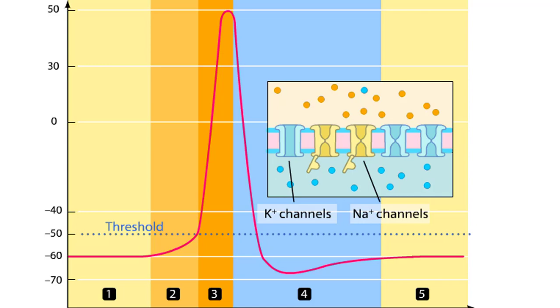An action potential is a rapid change in membrane potential that is governed by the opening and closing of ion channels in the plasma membrane of the neuron. In this tutorial, we will review the events of an action potential measured from a small area of a neuron's membrane.